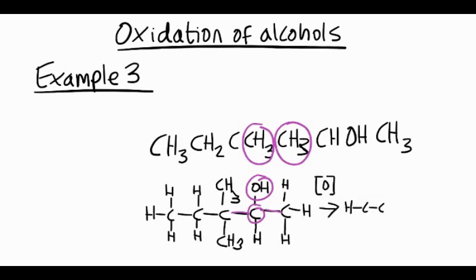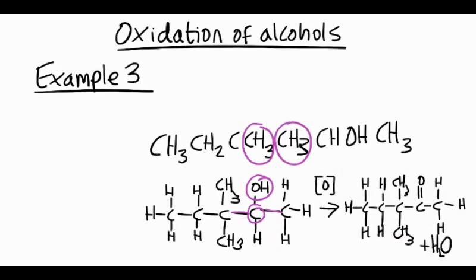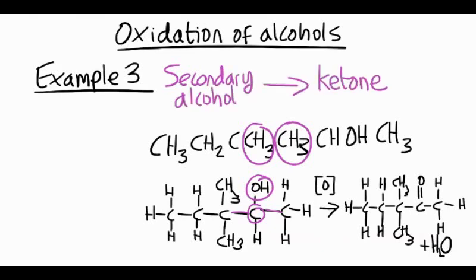If we try to oxidize a secondary alcohol, that means we can go to a ketone. And we doubly bond the oxygen that was part of the alcohol. Take a hydrogen away. And that's the ketone that we get. Also remember you form water. So a secondary alcohol goes to give a ketone.